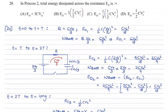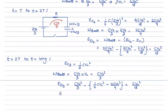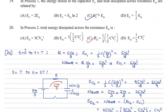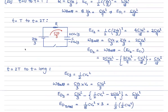The total energy dissipated across all three steps is 1/18 + 1/18 + 1/18 of CV_not squared, which equals 3/18 = 1/6 of CV_not squared. This equals one-third of half CV_not squared, i.e., one-third of the energy stored. So the answer is option C. If we charge the capacitor in steps, the energy dissipation is reduced compared to charging in one go.